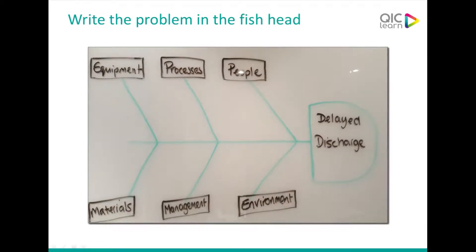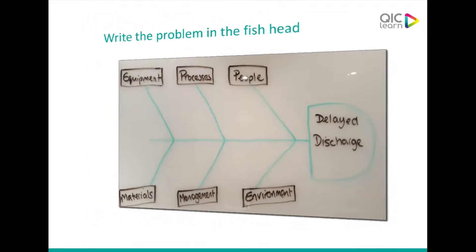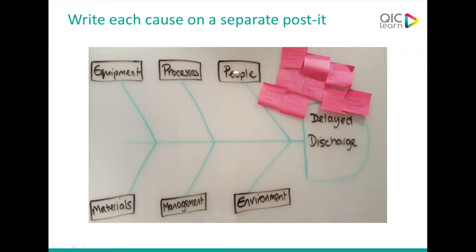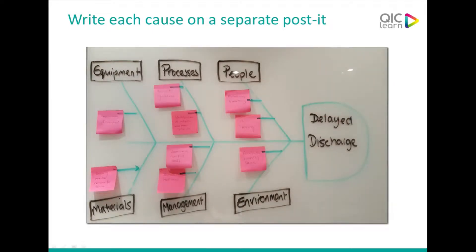Remember, these categories are not fixed for every fishbone and you can change them if you need different ones. You can then add in all the causes you can think of by writing them on individual post-its and match them to the category that best describes them. You can add or change categories depending on what you find — these are just examples.